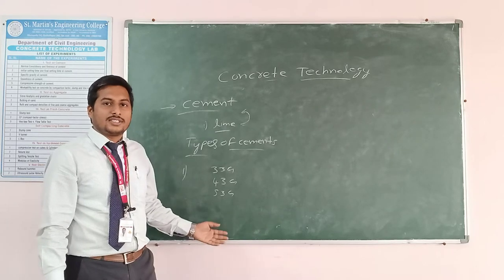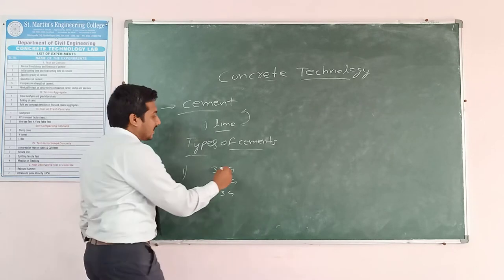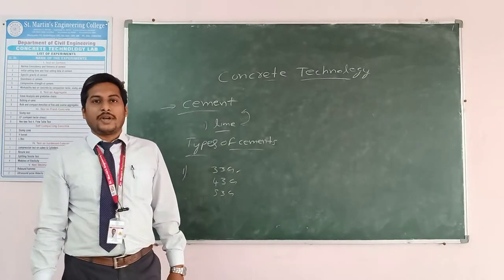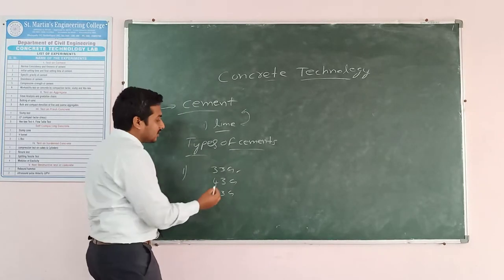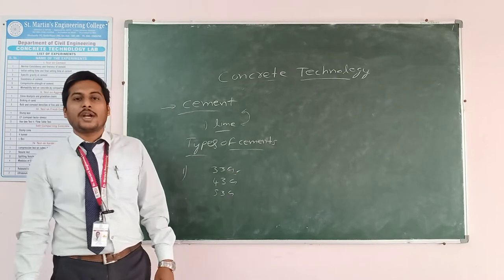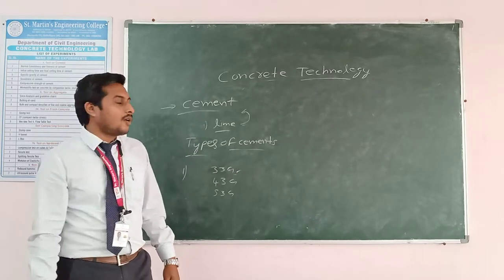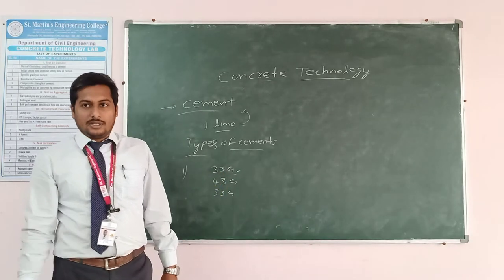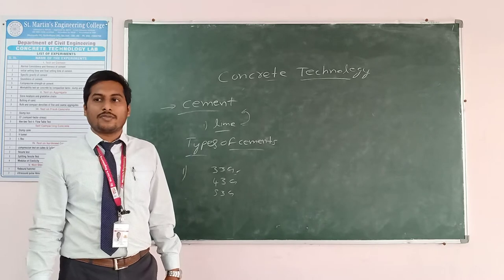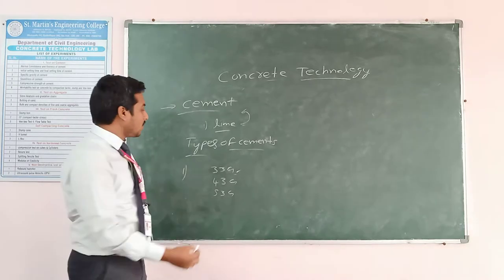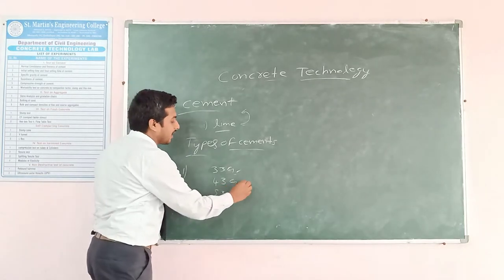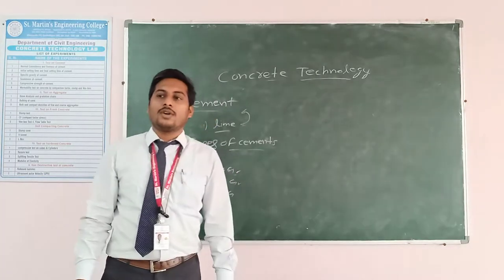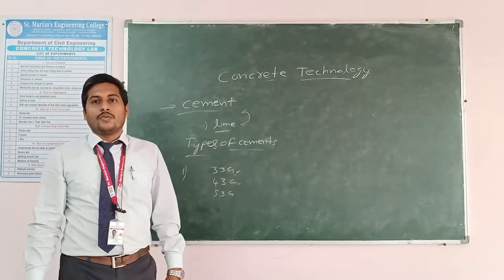In Ordinary Portland Cement, the grades are 33, 43, and 53. What is meant by grade? The grade represents the compressive strength of cement. Nowadays we are mainly using the 43 grade of cement.